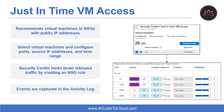The last topic is Just-in-Time VM access. Just-in-time virtual machine access locks down inbound traffic to your virtual machines, reducing exposure to attacks while providing easy access to connect to VMs when needed. When enabled, you create a policy that determines the ports to protect, how long ports should remain open, and approved IP addresses that can access those ports. Requests are logged in the Azure security log for easy monitoring and auditing. When just-in-time VM access is enabled, Azure Security Center creates a deny-all inbound traffic rule for the selected ports in the associated network security group and firewalls.